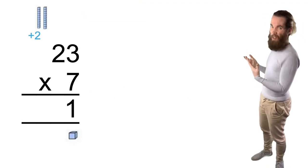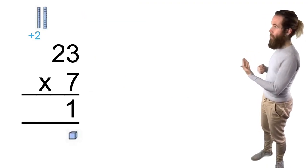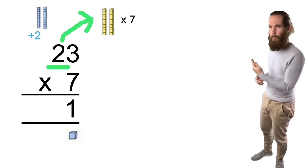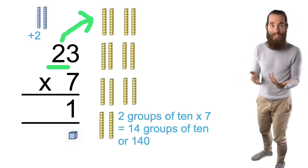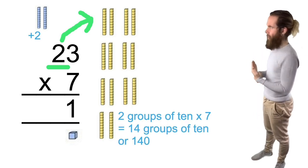So I've got now seven times two, which is actually seven times two groups of ten. Seven times two is 14, which is actually 14 groups of tens, so it's 140.